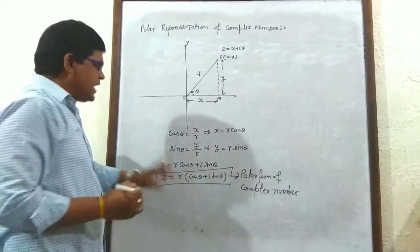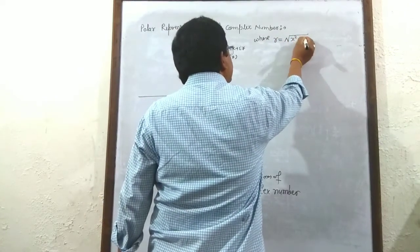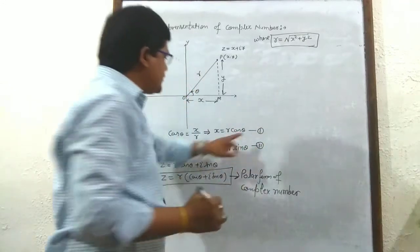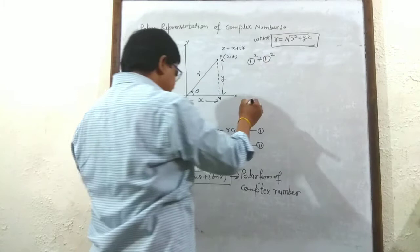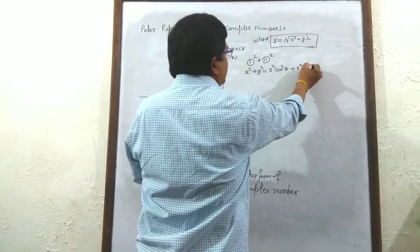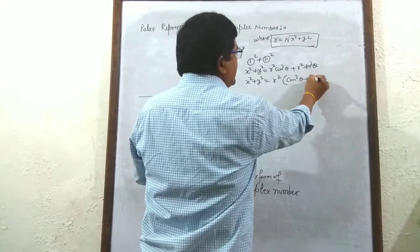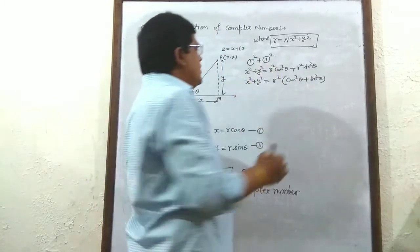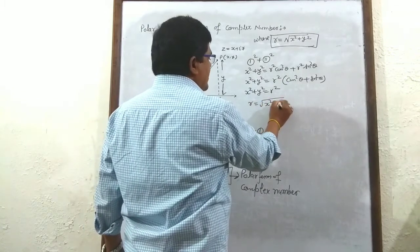Here r = √(x² + y²). How is this derived? From equations x = r cos θ and y = r sin θ, squaring and adding both equations, we get x² + y² = r² cos² θ + r² sin² θ = r²(cos² θ + sin² θ). Using the trigonometrical identity cos² θ + sin² θ = 1, we get x² + y² = r², so r = √(x² + y²).